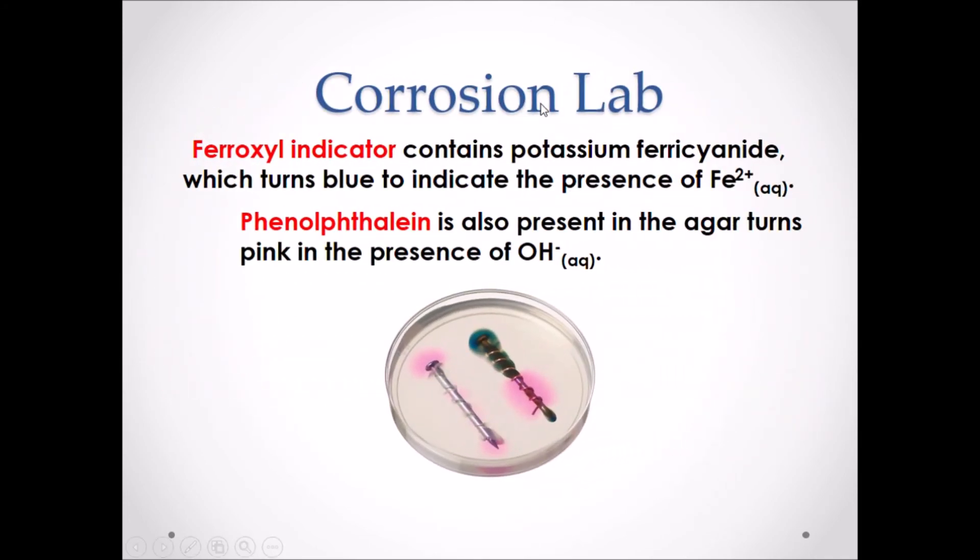Corrosion laboratory. Both of the following substances will be provided in an agar plate when testing. Ferroxyl indicator contains potassium ferricyanide, which turns blue to indicate the presence of Fe2+. Fe2+ would be a product of the oxidation of iron. Phenolphthalein is also present in the agar solution. It turns pink in the presence of OH-. Remember, OH- is a product of the reduction reaction of oxygen and water.